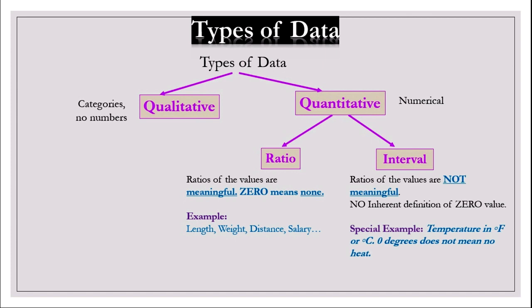For interval data, ratios of the values are not meaningful. No inherent definition of zero value. Here is a special example: temperature in F or in C, zero degrees does not mean no heat.